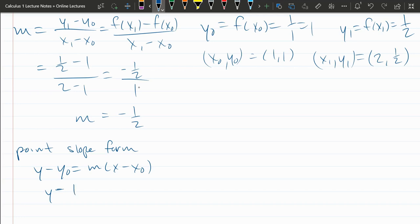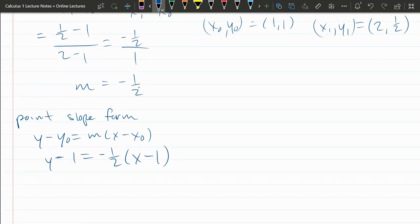Alright. y0 is 1. Slope negative 1 half. x minus x0 is also 1. And this is a great answer here. Great form.